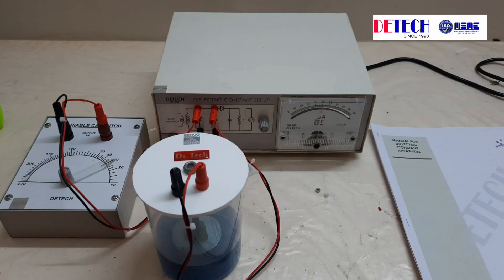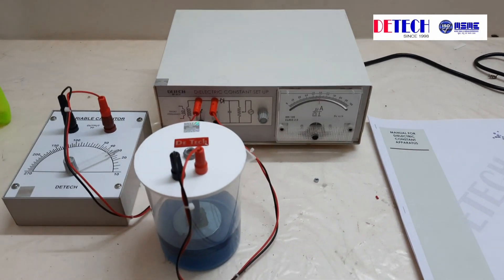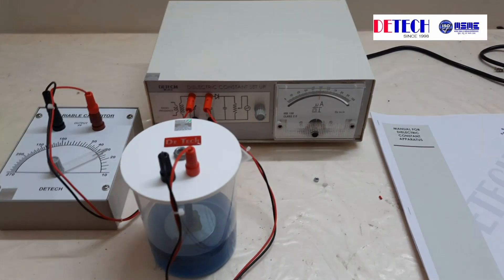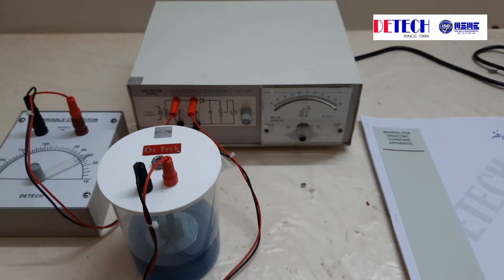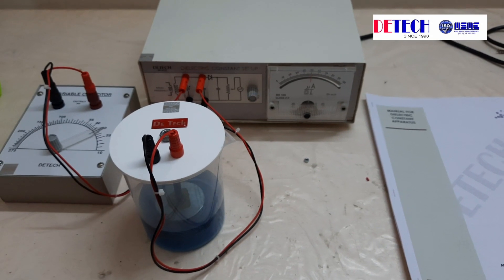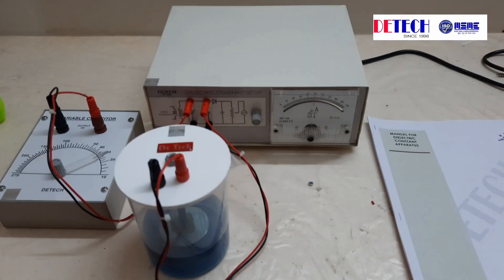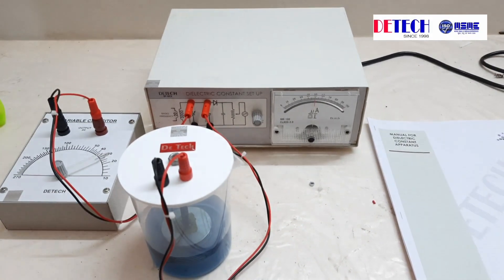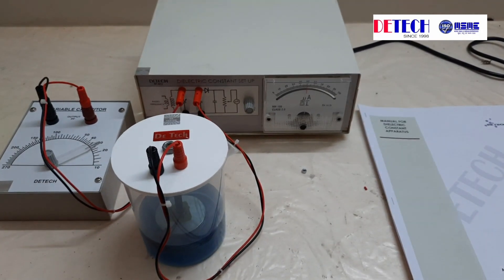So that is our value of C2, and we have already found out the value of C3 and C1. Now we simply have to put it in the formula for dielectric constant: that is C1 minus C2 divided by C1 minus C3, and find out the dielectric constant for the liquid over here, which is kerosene. That concludes our experiment. Thank you.